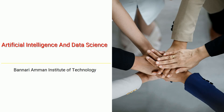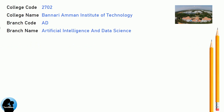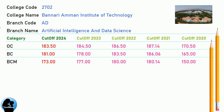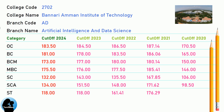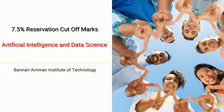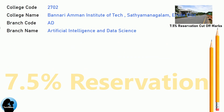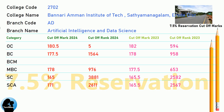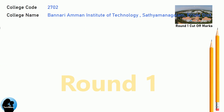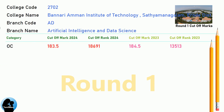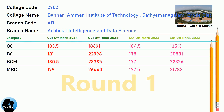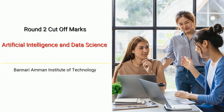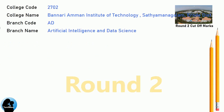DNA Cut-Off for Banari Amman Institute of Technology in Artificial Intelligence and Data Science. DNA 7.5 Reservation Cut-Off, Round 1 Cut-Off, and Round 2 Cut-Off for Banari Amman Institute of Technology in Artificial Intelligence and Data Science.